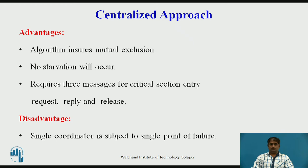The advantages of the centralized approach: this algorithm ensures mutual exclusion because at a time the coordinator allows only one process to enter a critical section. The algorithm also ensures that no starvation will occur because of the use of first-come-first-served scheduling policy. The main advantage is that it is simple to implement and requires only three messages for a critical section entry: a request message, a reply message, and a release message. However, it suffers from the usual drawbacks of centralized schemes — a single coordinator is subject to a single point of failure and can become a performance bottleneck in a large system.